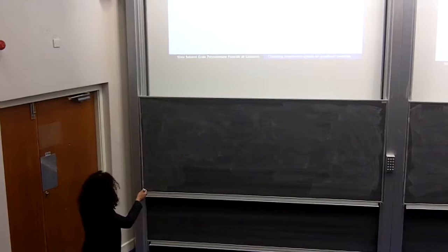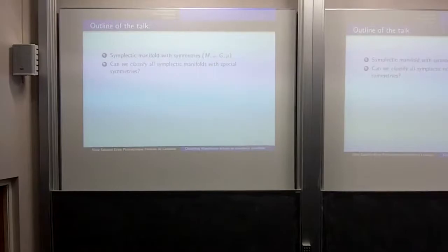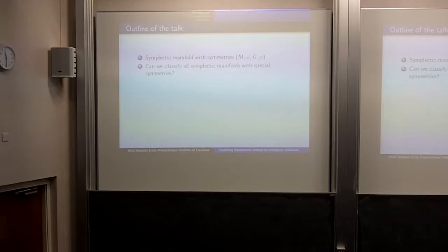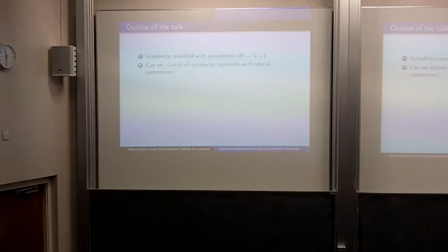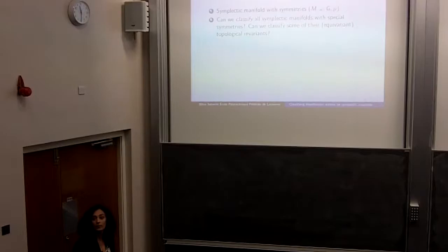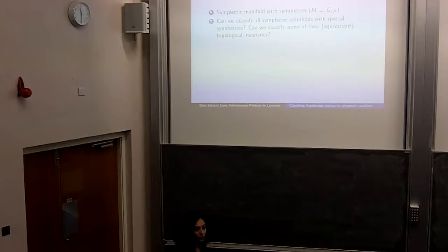First I will explain what a symplectic manifold with symmetries is, defining four objects. Then I will talk about how hard it is to classify these symplectic manifolds up to suitable transformations with these special symmetries, since the presence of G — a Lie group — complicates things. Instead of classifying all symplectic manifolds with symmetries, I'll focus on classifying their equivariant topological invariants: equivariant cohomology ring, equivariant Chern classes, and maybe in the future, equivariant K-theory ring.